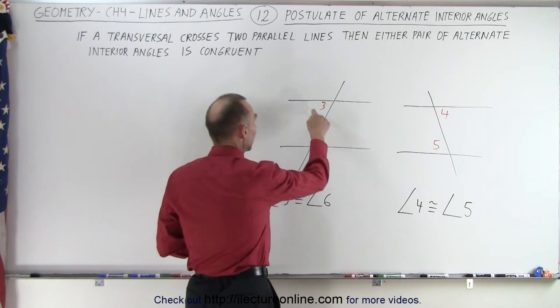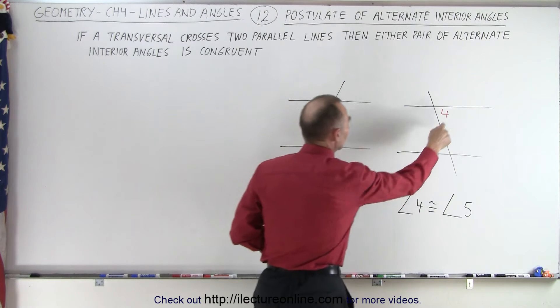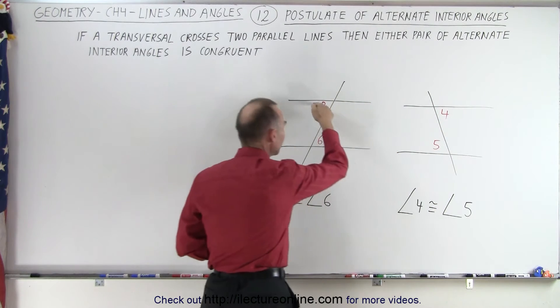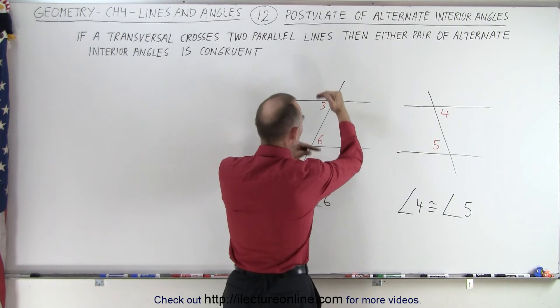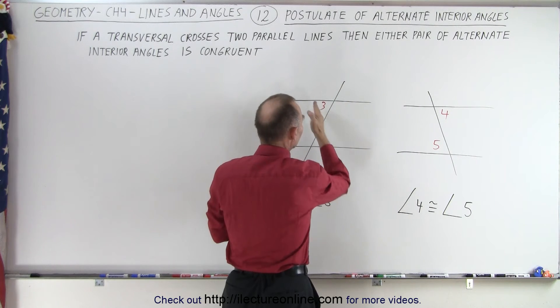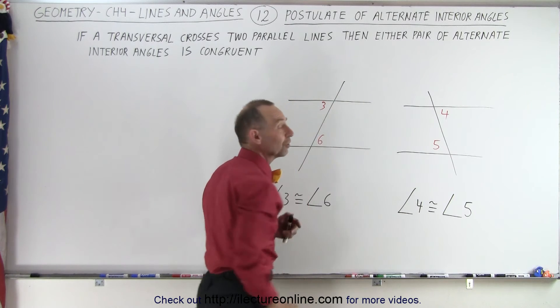Angle 3 and angle 6 are congruent. Angle 4 and angle 5 are congruent. And these are what we call alternate interior angles. They're interior to the two parallel lines and they're on alternate sides of the transversal.